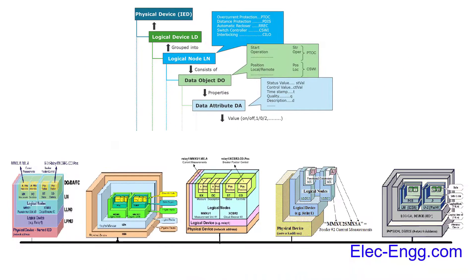The data model of the IEC 61850 standard is an object-oriented one, grouping the data into the smallest possible functions to be implemented independently. These smallest possible functional units are called logical nodes. The logical nodes, data, and attributes contain names according to standardized semantics. In IEC 61850, as you can see, the physical device and logical device names are not standardized and can be selected freely.